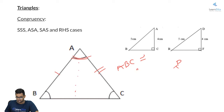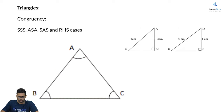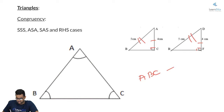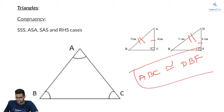Now let me move to the RHS case. This is only applicable for right angle triangles, where you are talking about the right angle, hypotenuse, and side. The right angle is the same irrespective of which triangle it is. If the hypotenuse and the side are the same for two right angle triangles ABC and DBF, you can clearly say that triangle ABC is congruent to triangle DBF — they are one and the same. These are the different rules for congruency.